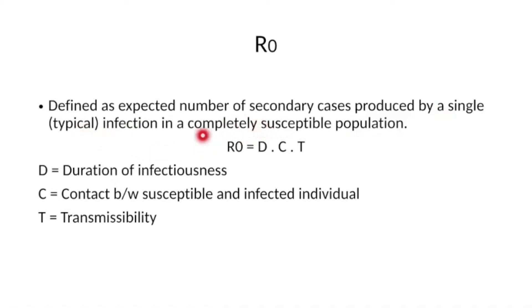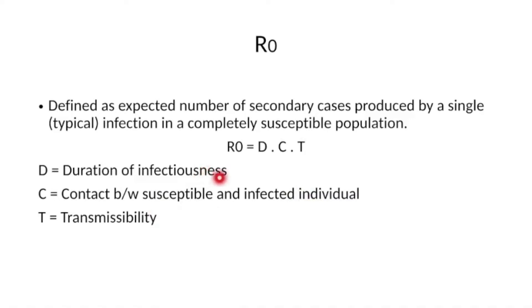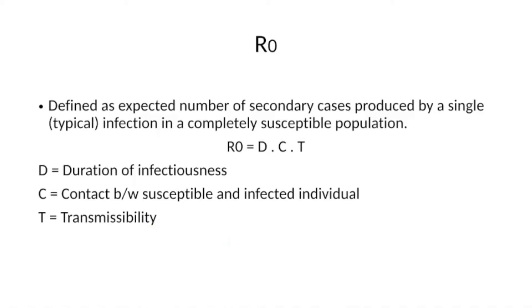Mathematically, R0 is given as the product of duration of illness, contacts between susceptible and infected individuals, and the transmissibility of the infection. Duration of infectiousness varies for various diseases. Contact between susceptible and infected individuals varies by different routes of acquiring the infection. Transmissibility gives the virulence of the infection.